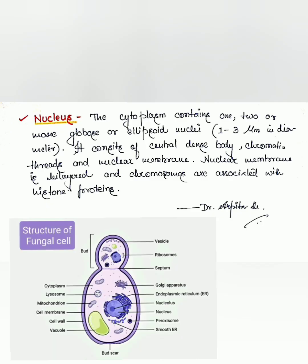The last component we'll talk about is the nucleus. The cytoplasm contains one, two, or more globose or ellipsoid nuclei, which are usually one to three micrometers in diameter. Each nucleus consists of a central dense body, chromatin threads, and a nuclear membrane. The nuclear membrane is bilayered and chromosomes are associated with basic histone proteins.